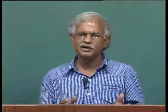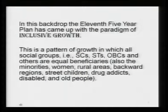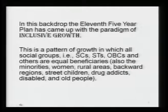How do they define inclusive growth? The meaning is obvious. If the fast development of the post-reform period has not benefited all sections of society equally, then we should look for a model of development whose benefits reach out more to the disadvantaged sections. To quote from the Planning Commission draft, this is a pattern of growth in which all social groups — SCs, STs, OBCs, minorities, women, rural areas, backward regions, street children, drug addicts, the disabled, and old people — are equal beneficiaries.